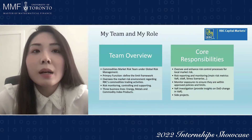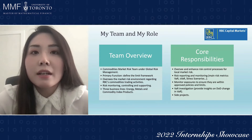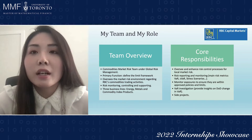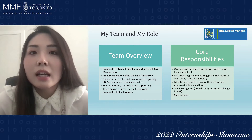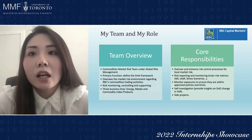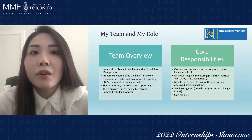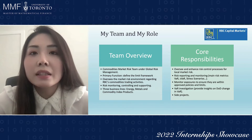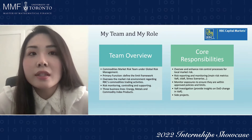The commodity market risk team defines the limit framework and oversees the risk environment regarding RBC's commodities trading activities. There are three main commodity business lines: energy, metals, and commodity index products. The energy line includes oil and refined products, natural gas, power, carbon, and agricultural commodities, while the metals line includes precious metals and base metals.